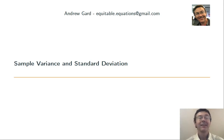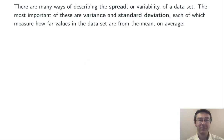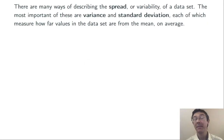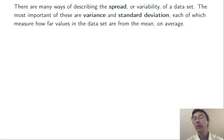Today we're working to understand sample variance and standard deviation. These are both ways of describing the spread or variability of a data set. In particular, each one of them measures how far values in the data set are from the mean, on average.